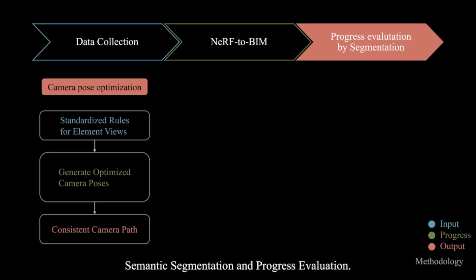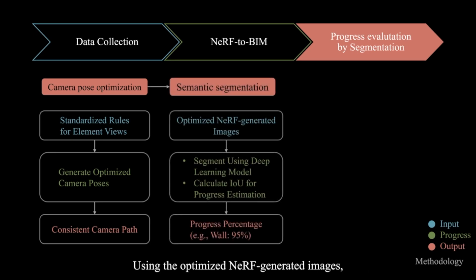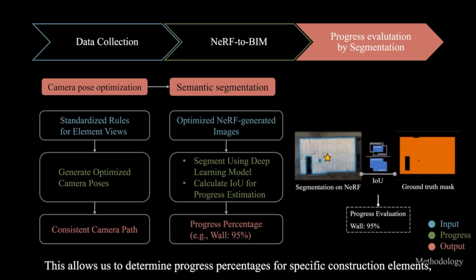Semantic segmentation and progress evaluation. Using the optimized Nerf-generated images, we perform semantic segmentation with a deep learning model to calculate IOU and estimate progress. This allows us to determine progress percentages for specific construction elements such as walls, floors, and other structures.